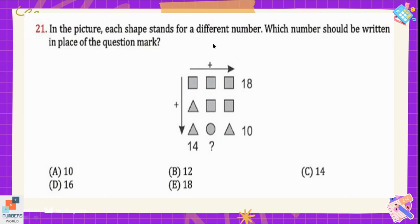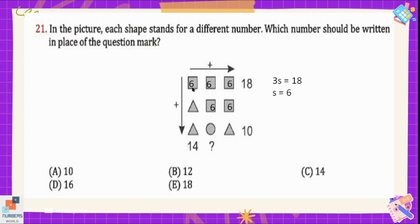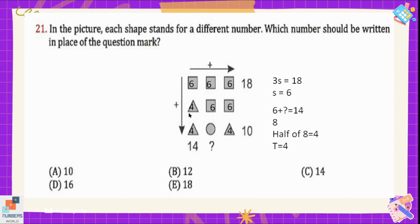Question number 21: in the picture, each shape stands for a different number. Which number should replace the question mark? The sum of 3 squares equals 18, so dividing 18 by 3 gives 6 — the value of one square is 6. Using the second equation, 1 square plus 2 triangles equals 14: 6 plus 8 equals 14, and since there are 2 triangles, each triangle equals 4 (since 6 + 4 + 4 = 14).